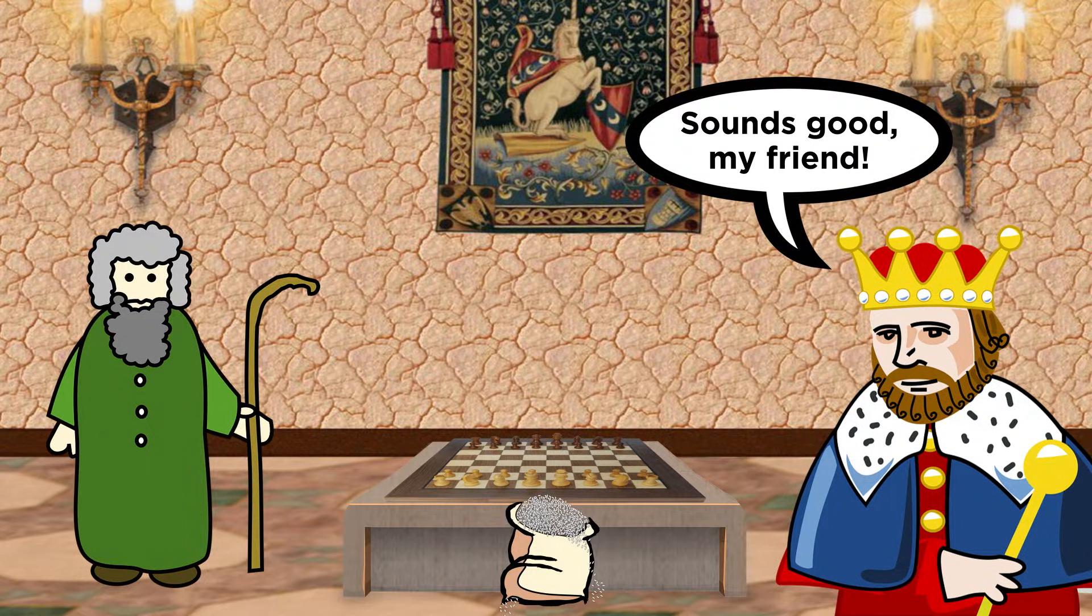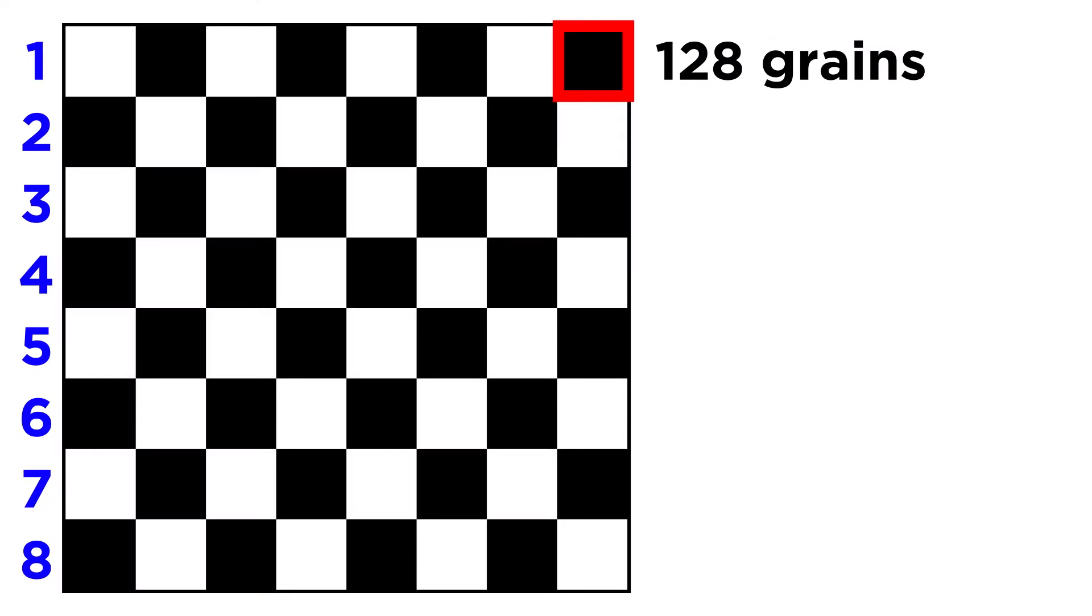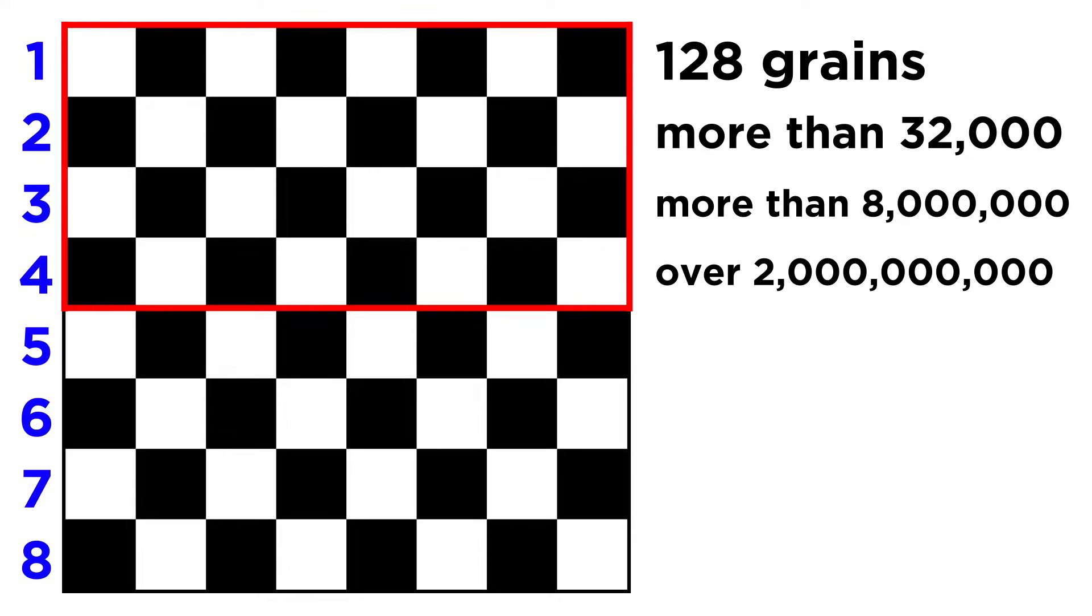The king began to oblige, but he very quickly found how impossible this request was to fulfill. By the end of the first row, he was already up to a hundred and twenty-eight grains. By the end of the second row, over thirty-two thousand. The third, more than eight million. The fourth, over two billion grains of rice, and that's just half the board.